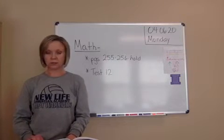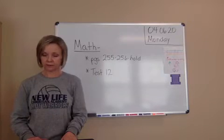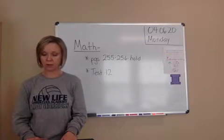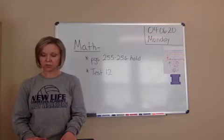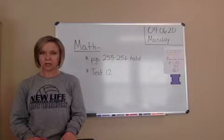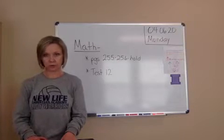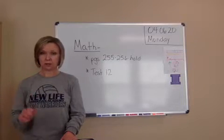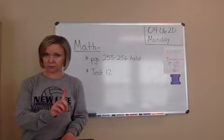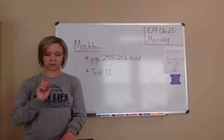Number one: solve the story problem. Carly earns $3.75 per hour helping in her parents' dog grooming business. If she works two hours every Saturday for five Saturdays, how much will she earn? This is a two-step problem. You've got to find out one piece of information before you can answer the question. Number one is worth four points, so be careful here.